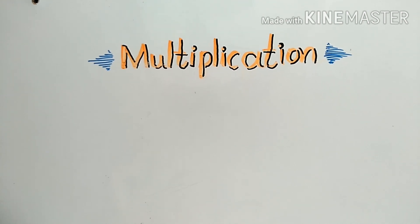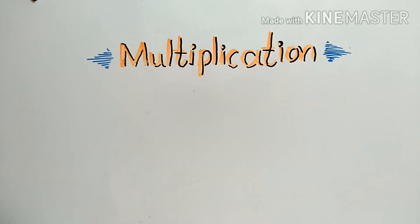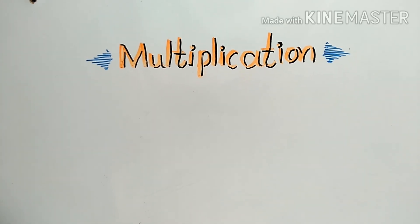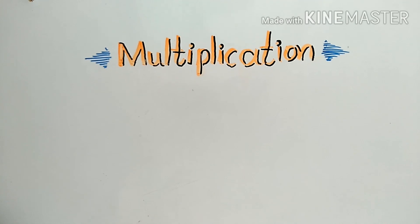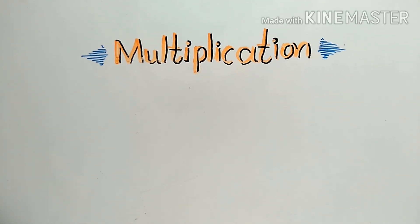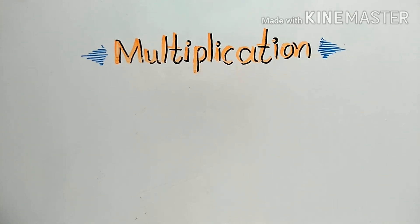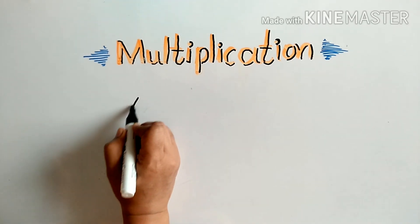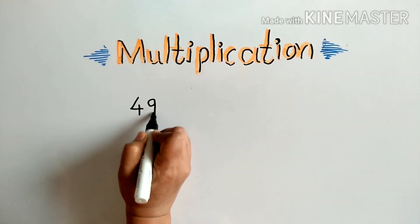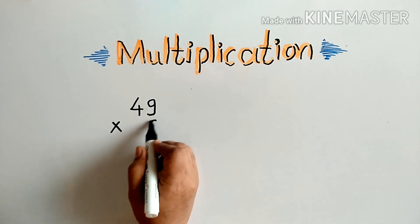Hello students. In the previous video we learned how to multiply a one digit number by a one digit number. Now we will go one step forward. In this video we are going to learn how to multiply a one digit number by a two digit number. We will take the first example: 49 multiplied by 6.